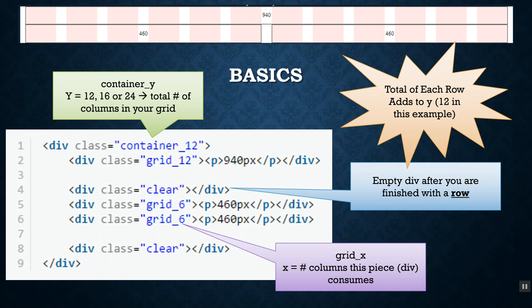The basics are that the main part of the page gets a big div around it, and that div gets a class starting with the word 'container,' an underscore, and then the value of the grid system you want: container_12 for a 12-column grid, container_16 for 16 columns, container_24 for 24 columns. Inside that, you define all your rows. All the columns in a row have to add up to the total number — so in a 12-column grid, sections in each row must add up to 12.